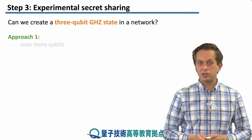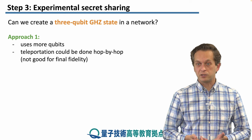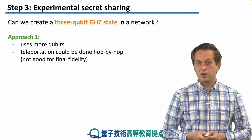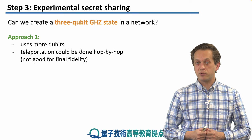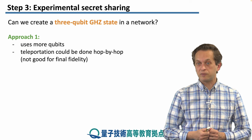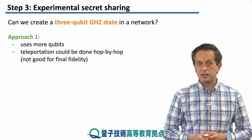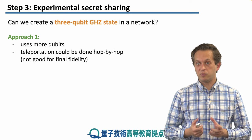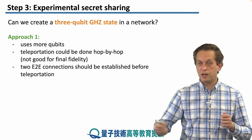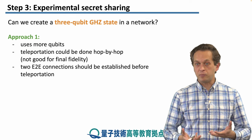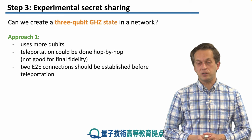Approach one uses quite a lot of qubits and requires teleportation. How we do teleportation is important — for example, we could do it hop by hop if the GHZ state is not between neighboring nodes. If B has to teleport over many hops to a distant node, the final fidelity is not very good. We may want to first establish an end-to-end connection, purify it to achieve higher fidelity, and then execute the teleportation.